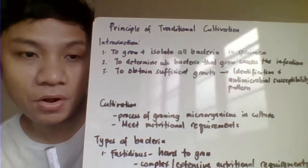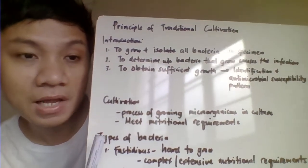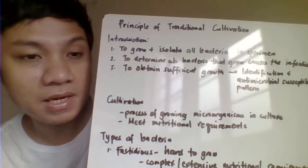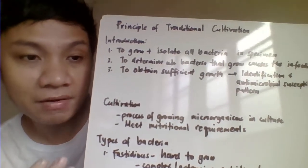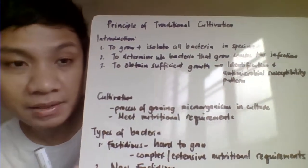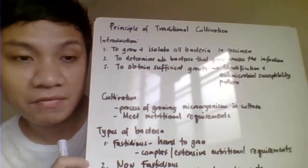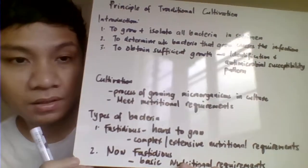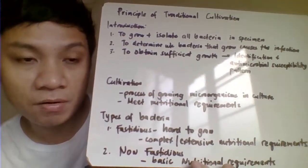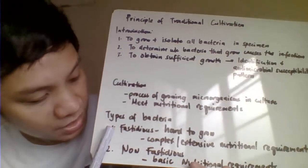For bacteria to grow in our different culture media, we need to provide their necessary nutritional requirements. That is why the agar where we grow our bacteria is supplemented with different nutritional requirements, since each bacterium has different nutritional needs. We classify bacteria according to their nutritional requirements.